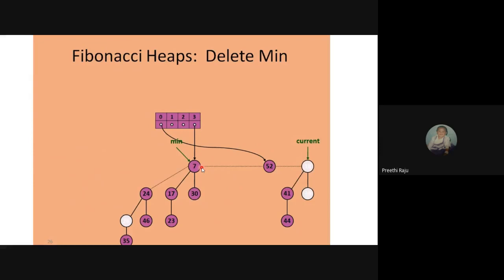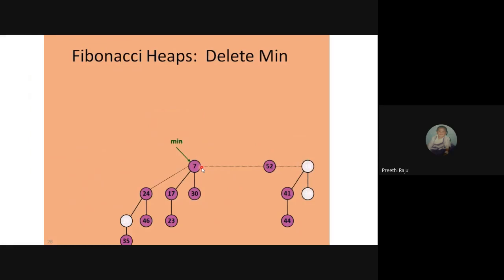After consolidation, all nodes have different degrees. For node 7, it has degree 3. Node 52 has degree 0 since it has no child. The other nodes have degrees 1 and 2. This completes the deletion structure — you delete the minimum pointer value through this consolidation process.